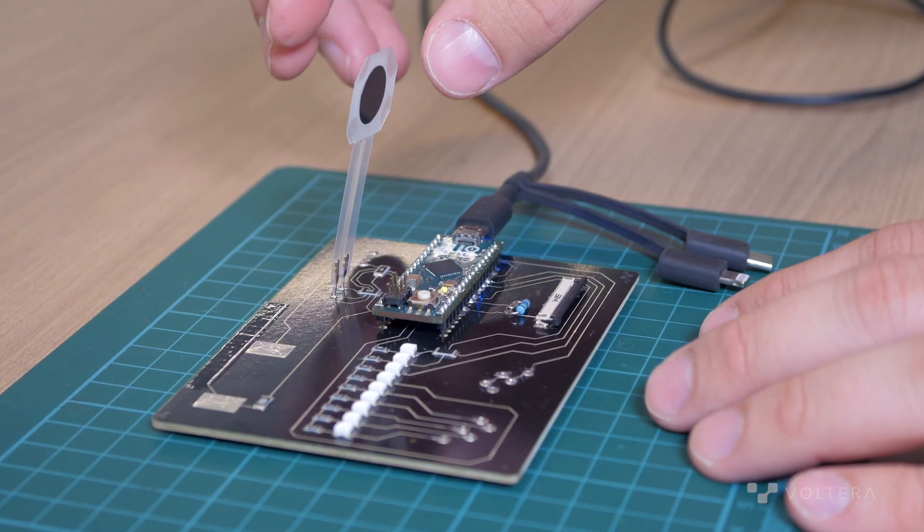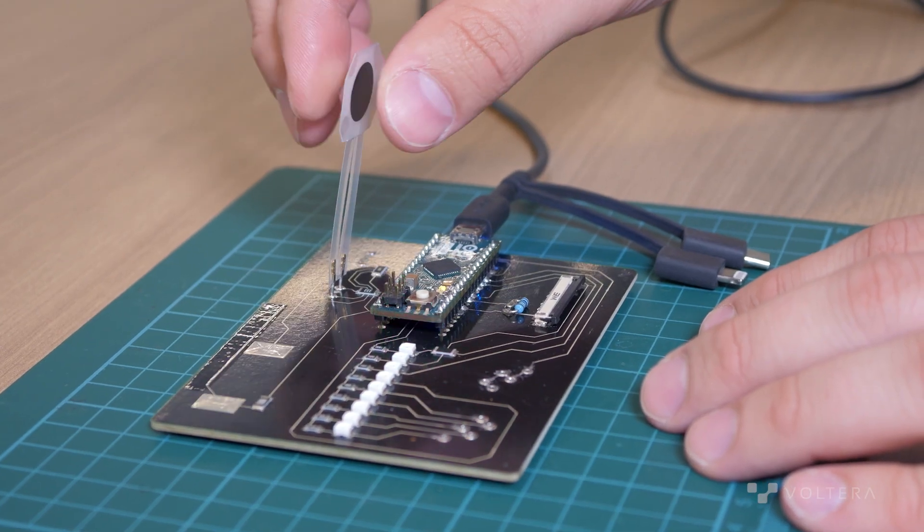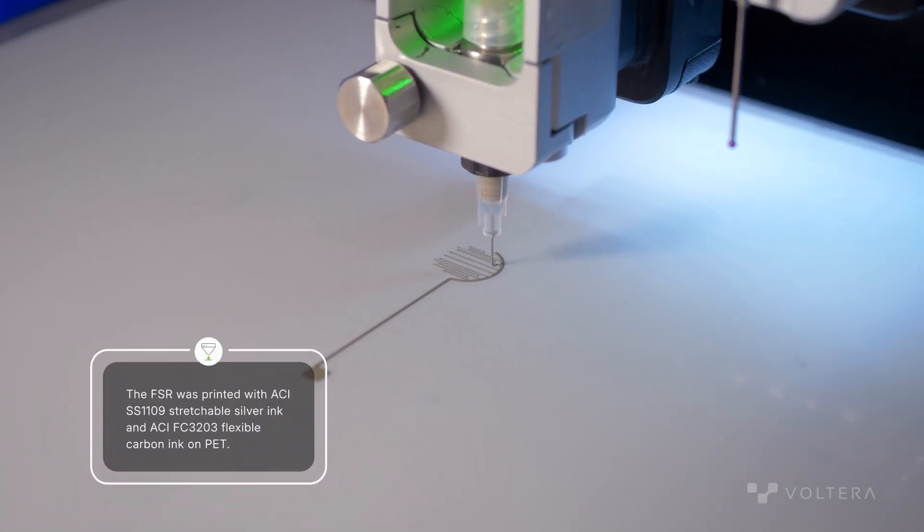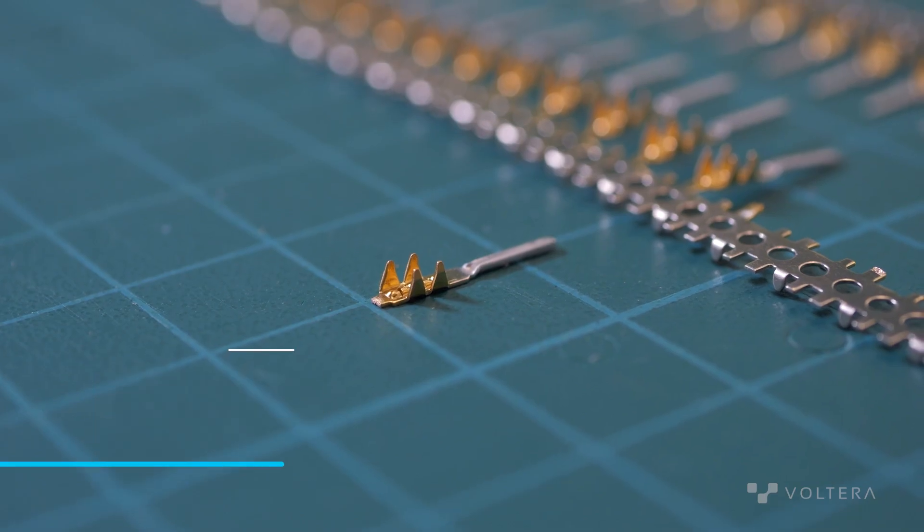Our next print is a force-sensitive resistor, which detects a change in resistance when force is either increased or decreased on the surface of the circuit. This FSR was also printed on PET, but this time we'll use a crimp connector.